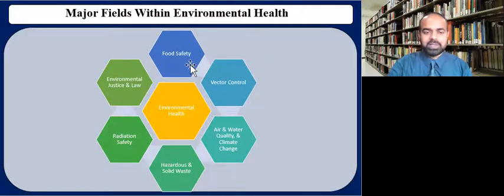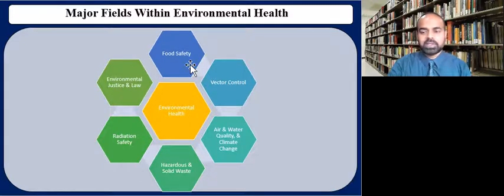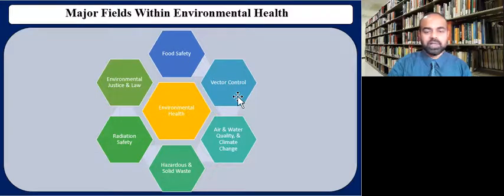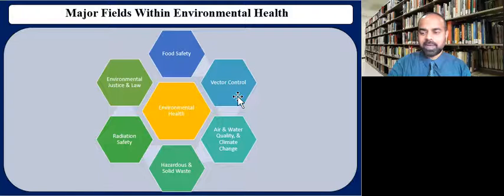Food safety deals with the enforcement of health and safety standards in the handling of food preparation for the public. It also educates food operators on proper food preparation and service. Vector control, on the other hand, deals with enforcement of various public health laws, sanitary codes, and other regulations related to the spread of disease by vectors, such as mosquito-borne diseases, as well as other zoonotic diseases.